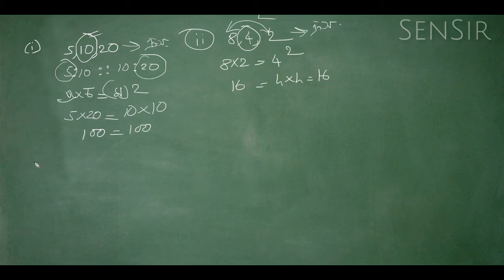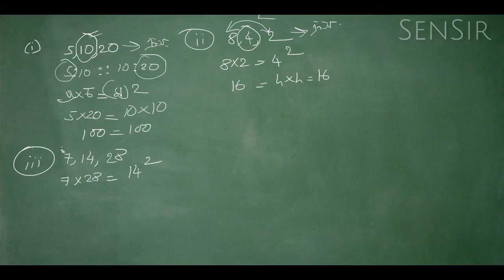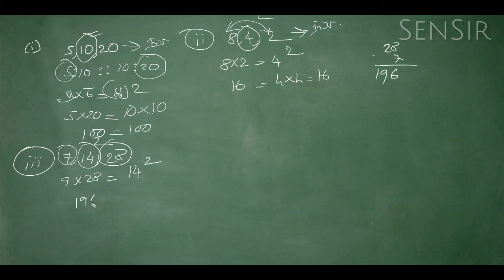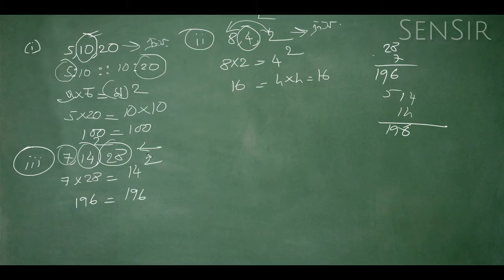Now look at the three numbers: 7, 4, 8. This is 7 into 28, which is equal to 14 squared. That's right — 7 into 28 equals 14 squared, so 14 into 14 is equal to 196. So this is 7, 14, and 28 — this is chromic path.